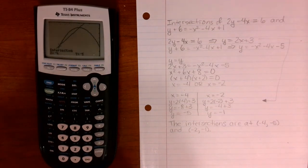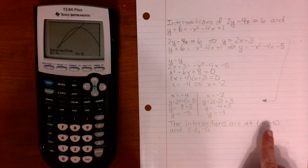And it's found that intersection, that intersection is at negative 4 comma negative 5, which is what we found here.